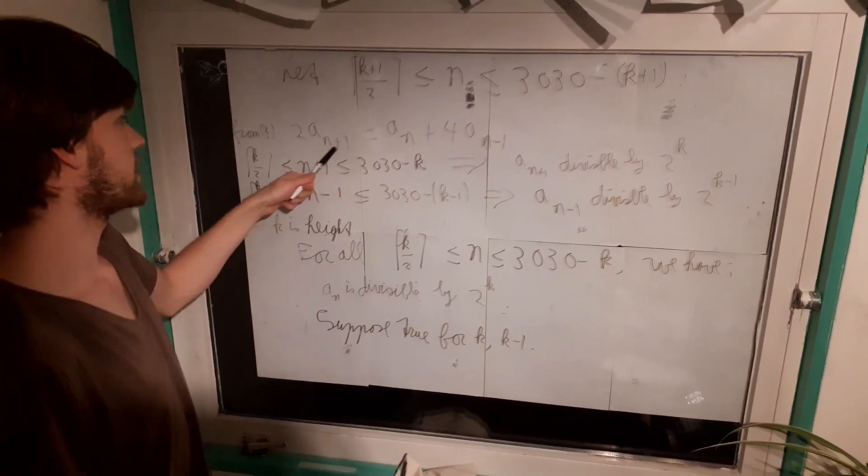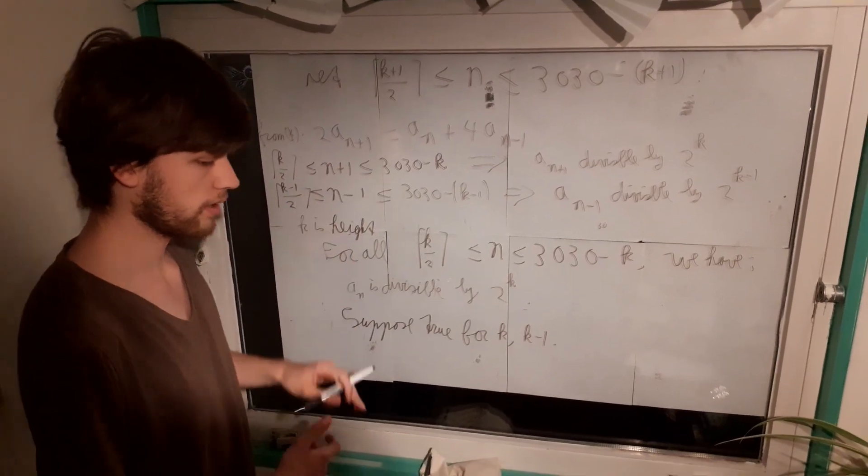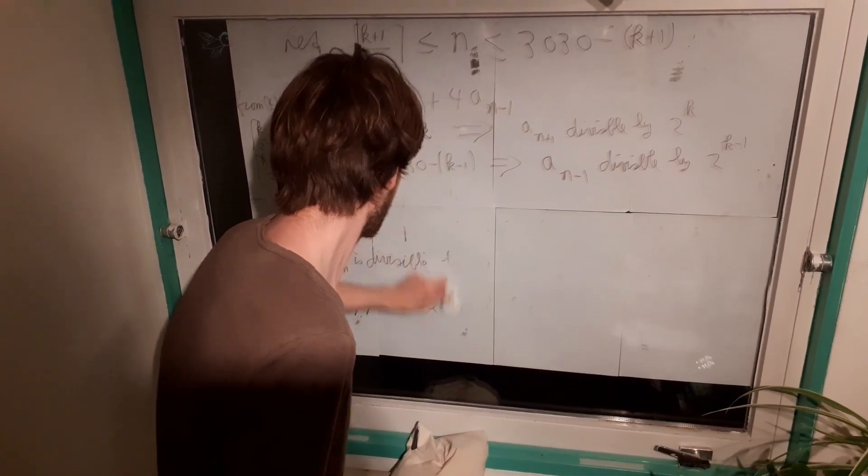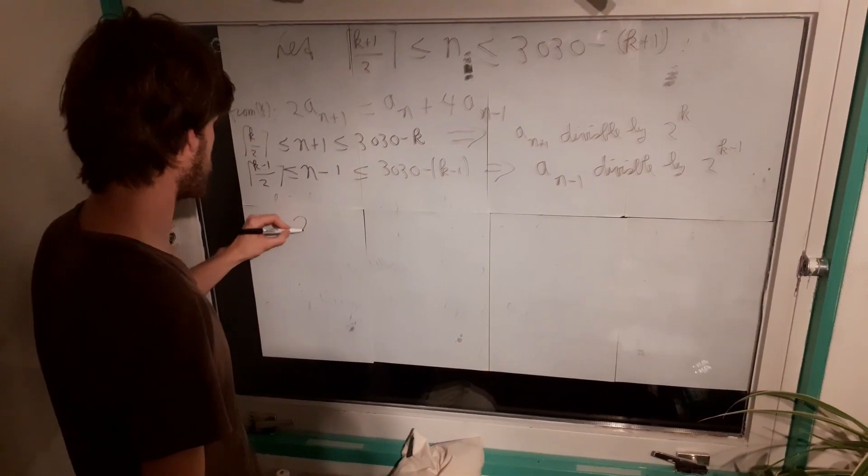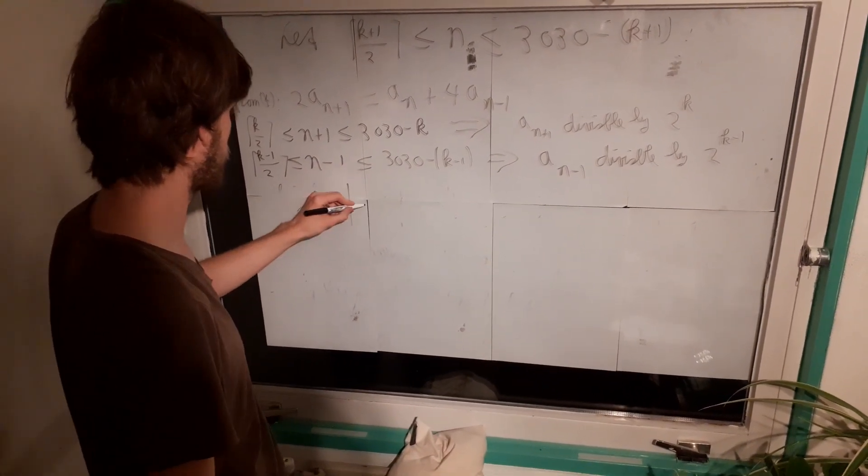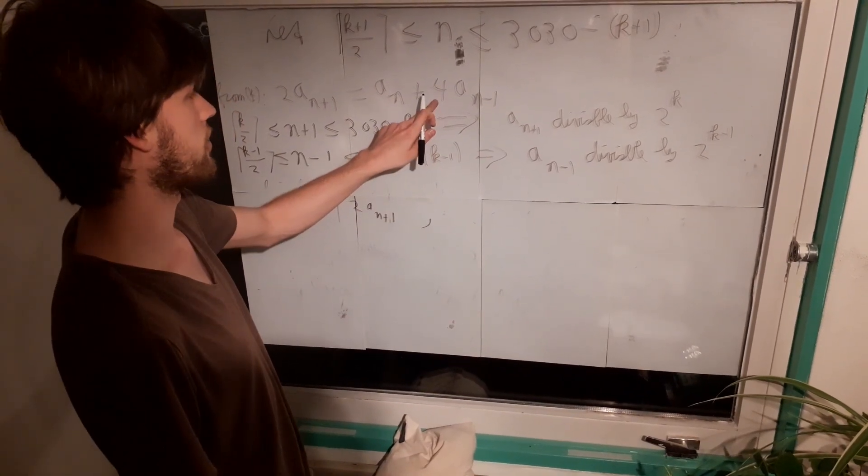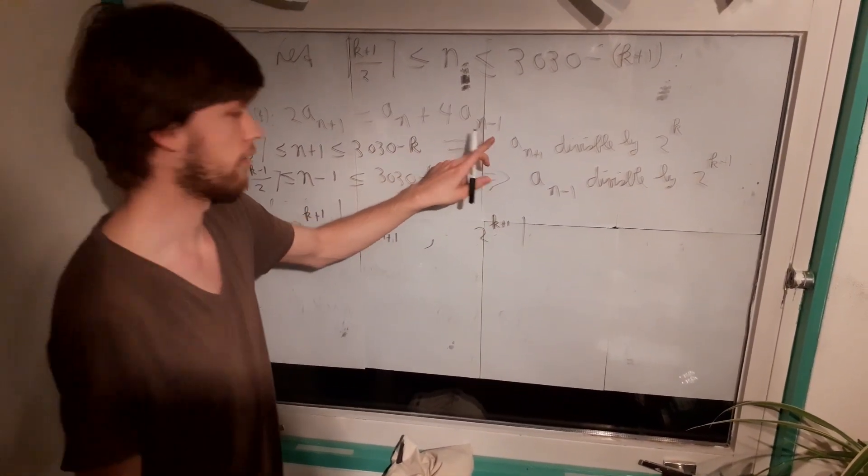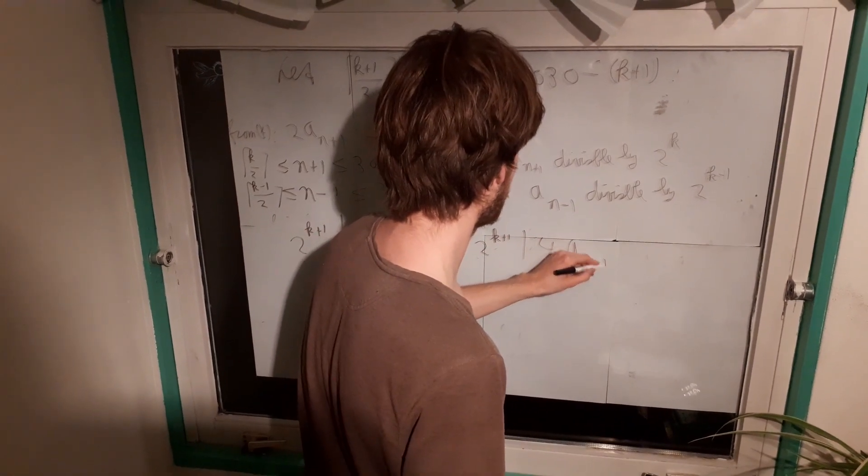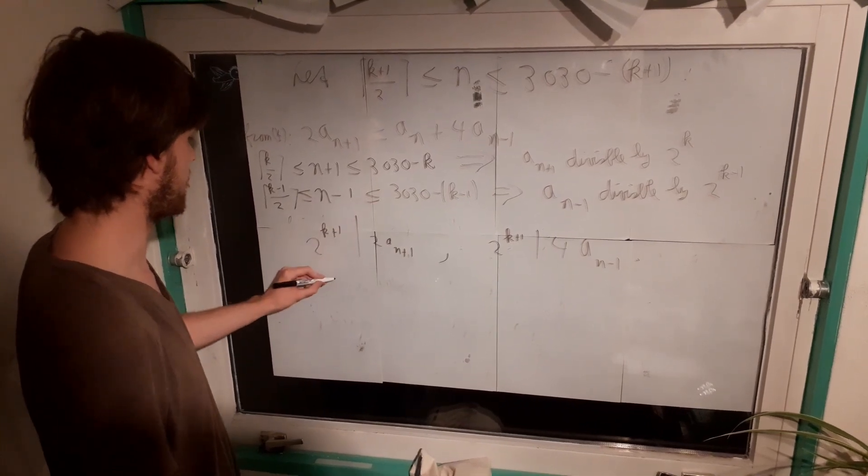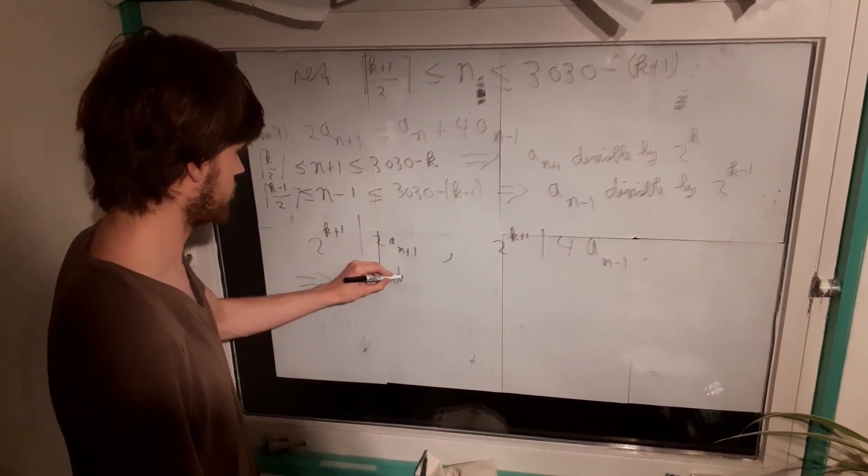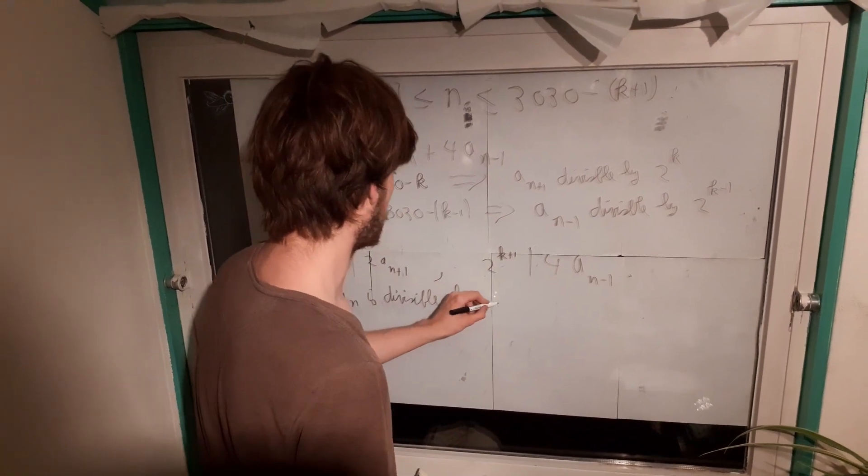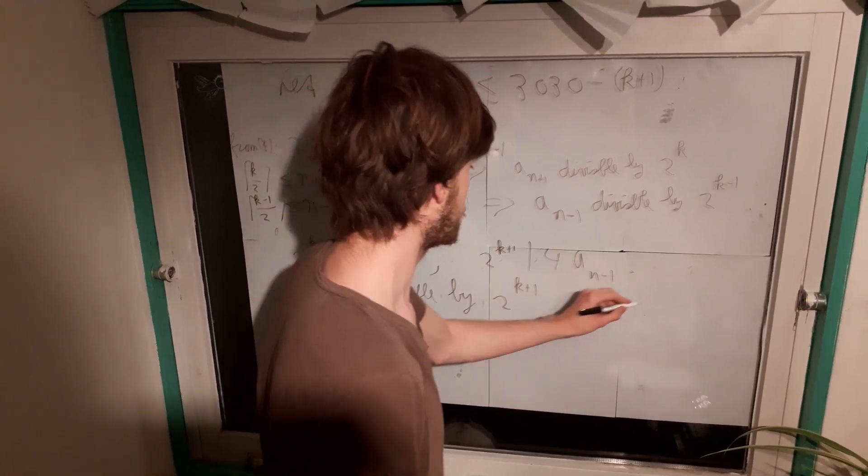Now if you look at this formula again, we see that this left-hand side is divisible by 2 to the power of k plus 1. So 2 to the power of k plus 1 is divisible by 2a_{n+1}. And also, since we have a factor of 4 here, we get 2 to the power of k plus 1 is also divisible by 4a_{n-1}. And you conclude that a_n is divisible by 2 to the power of k plus 1. This finishes our induction.